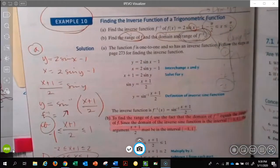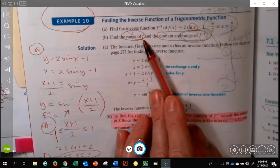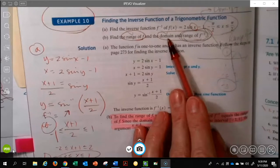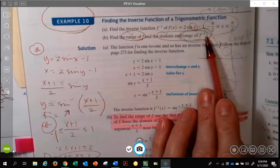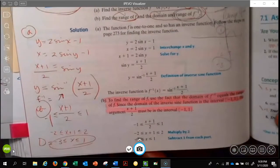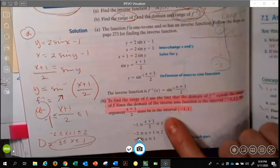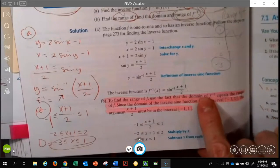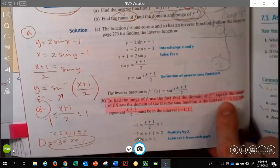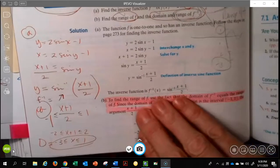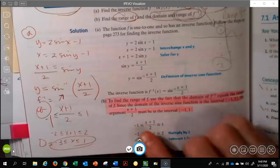Now they've asked us for a part B, and part B says, let's find the range of f, and the domain and the range of the inverse of f. And so, I've got some stuff highlighted. I'll go ahead and read the stuff highlighted. It says, to find the range of f, use the fact that the domain of the inverse equals the range of f. And so, since the domain of the inverse is on this interval, then we've got to go and replace some stuff here.